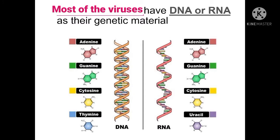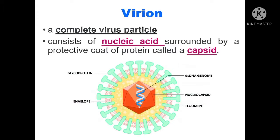Most viruses have DNA or RNA as their genetic material. Genetic material is needed in order for the virus to replicate and survive. A virion is a complete virus particle which consists of nucleic acid surrounded by a protective coat of protein called a capsid, as shown in the diagram below.